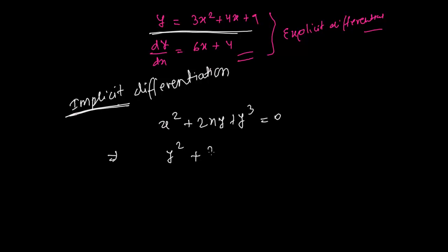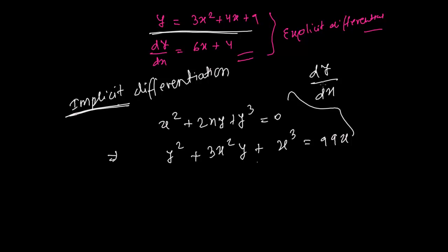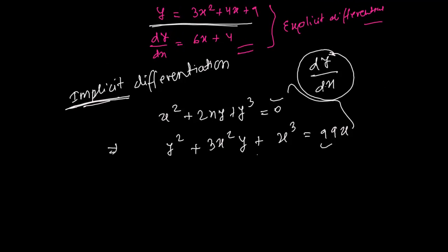Here is another example: y² + 3x²y + x³ = 99x. In this type of function, everything is mixed. The question is: how do you find the derivative? You may or may not be able to solve for y, but you can still find dy/dx. The procedure for finding dy/dx for these types of functions is called implicit differentiation, and it is not very hard — it is actually quite simple.